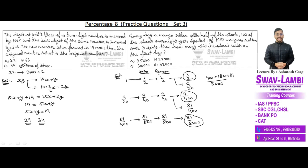Total spoiled mangoes over 3 nights = 661/8000 of total. Given actual spoiled = 1983, so 661 units = 1983. Therefore 1 unit = 3, and total mangoes = 8000 × 3 = 24,000. Answer is option B — 24,000 mangoes at the start. This was solved using fraction-to-percentage conversion method. If you didn't follow, check our fraction-to-percentage conversion video.